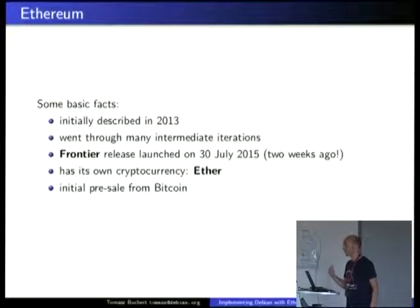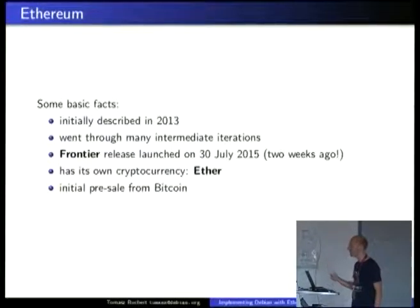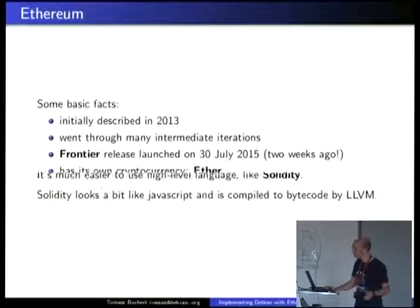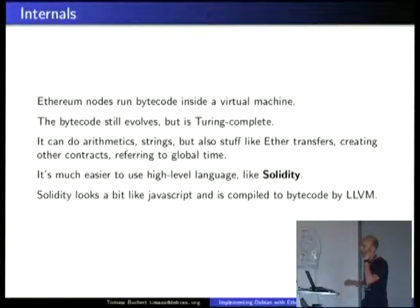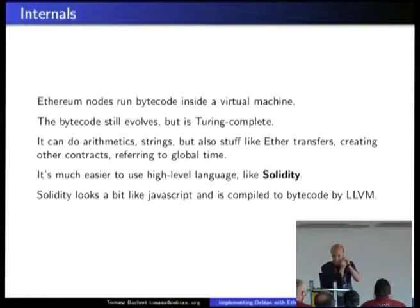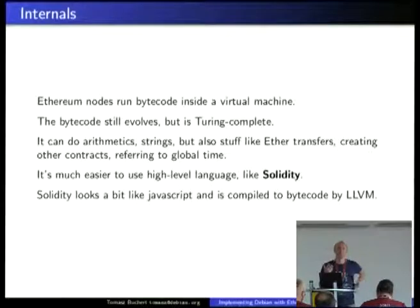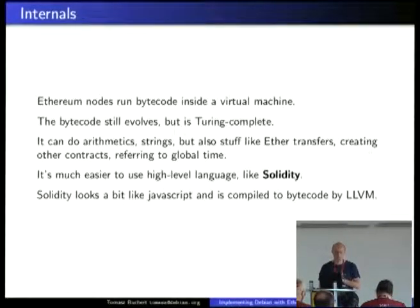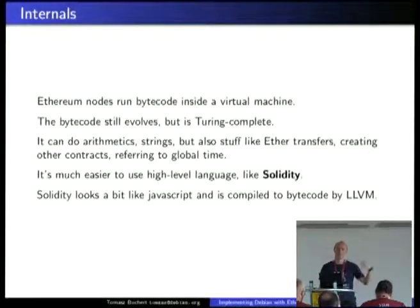Instead of Bitcoins, you have Ether — same principle, hash functions are a bit different. I mined some blocks using Amazon GPUs, just for fun. Internally, there is bytecode that runs on a virtual machine that is basically distributed everywhere, like Bitcoin, but it's Turing complete — you can do whatever you want. You can do arithmetic, strings, and so on. There's a JavaScript-like language you can use to compile your programs, and then you publish them on the blockchain. They are using LLVM right now to do that.